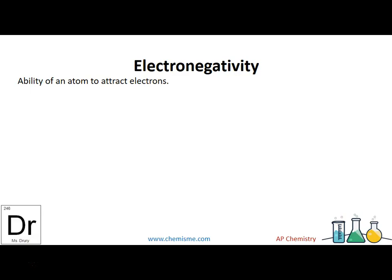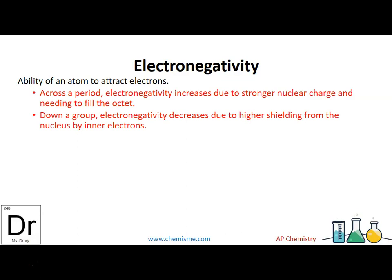Electronegativity is the ability of an atom to attract electrons, not to be confused with ionization energy, which is an energy to remove electrons. This is attracting electrons. Across the period, it increases due to nuclear charge increasing, or protons pulling, and they're needing to fill the octet. So our protons can attract new electrons and fill the octet.